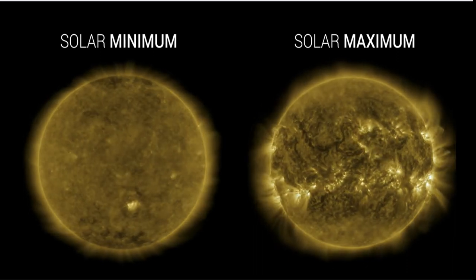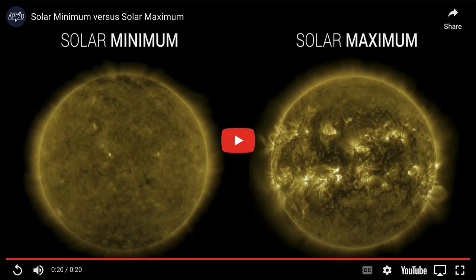When we're at solar maximum, the sun is very energetic and giving off a lot more things like solar flares that we see, and that can affect us here on Earth.